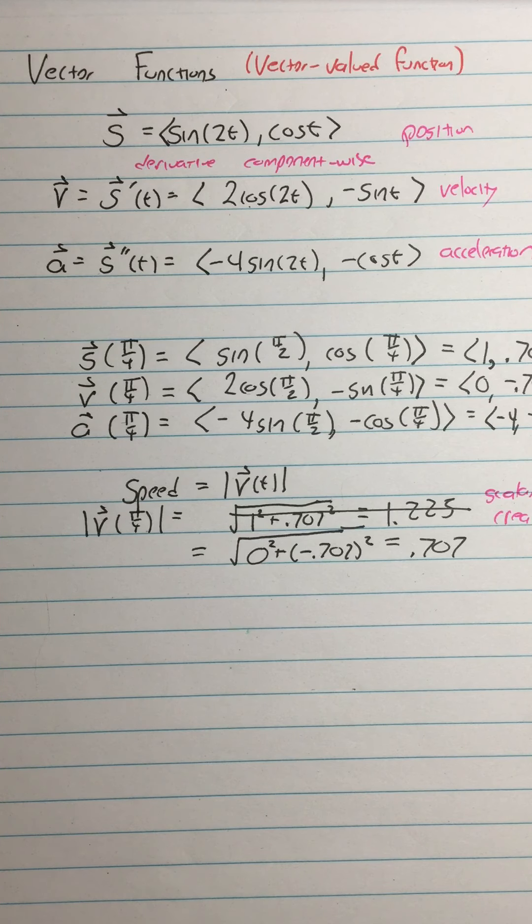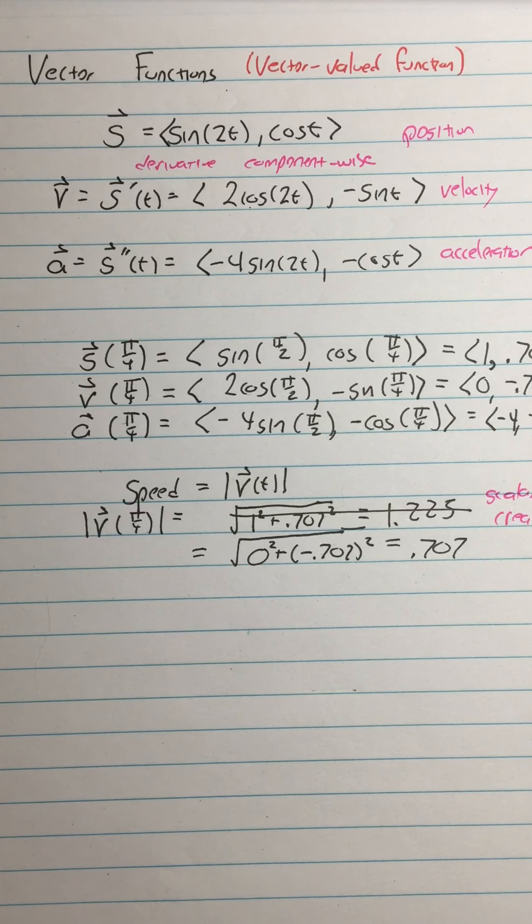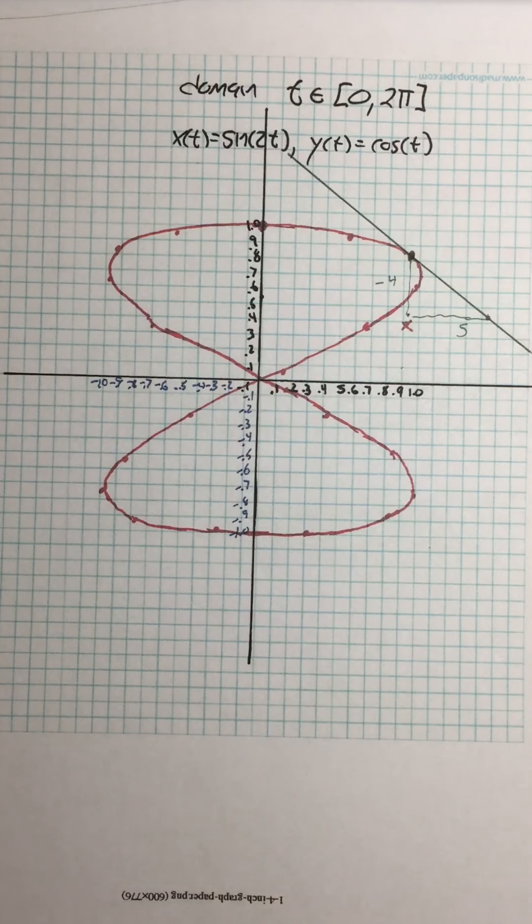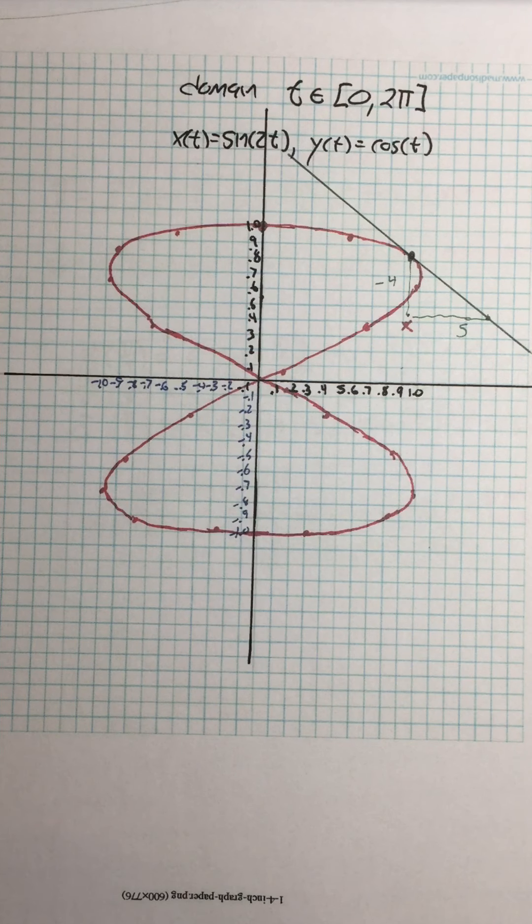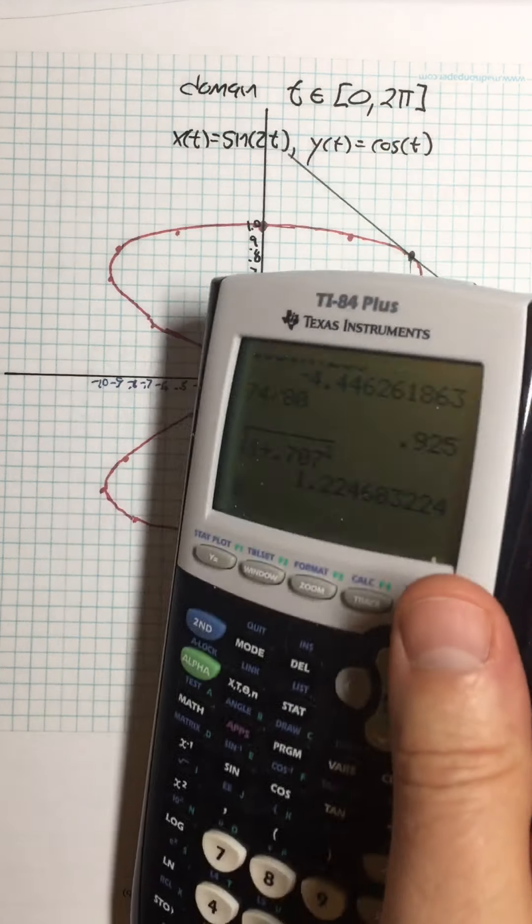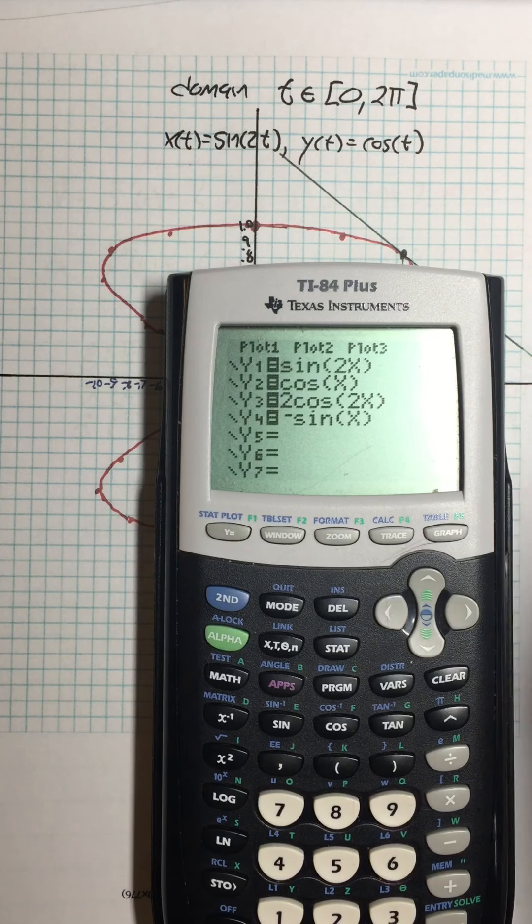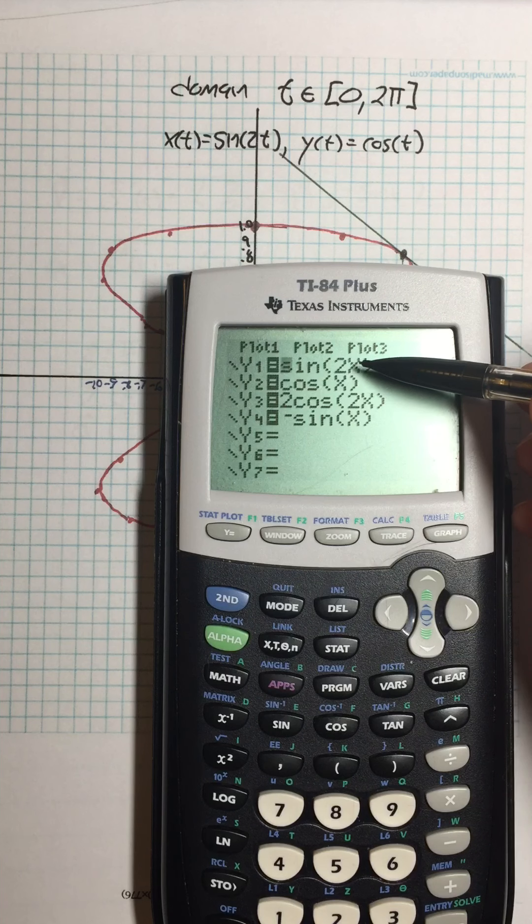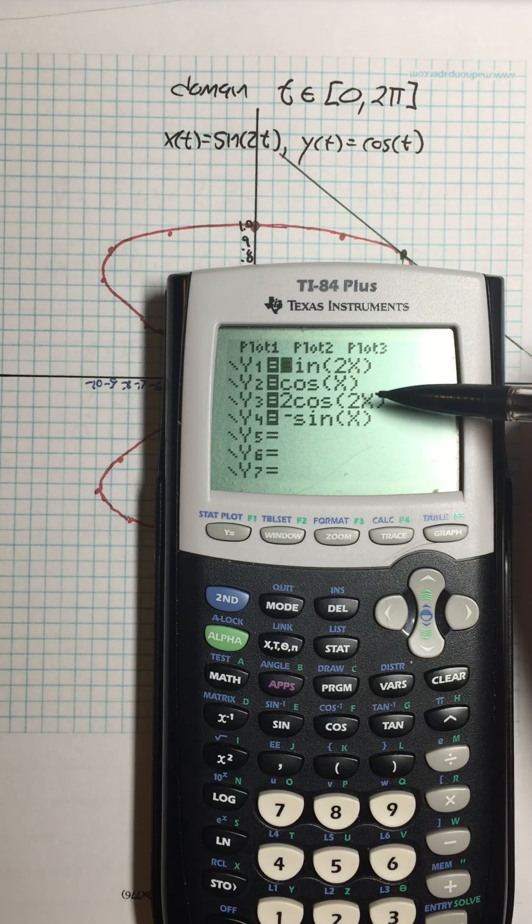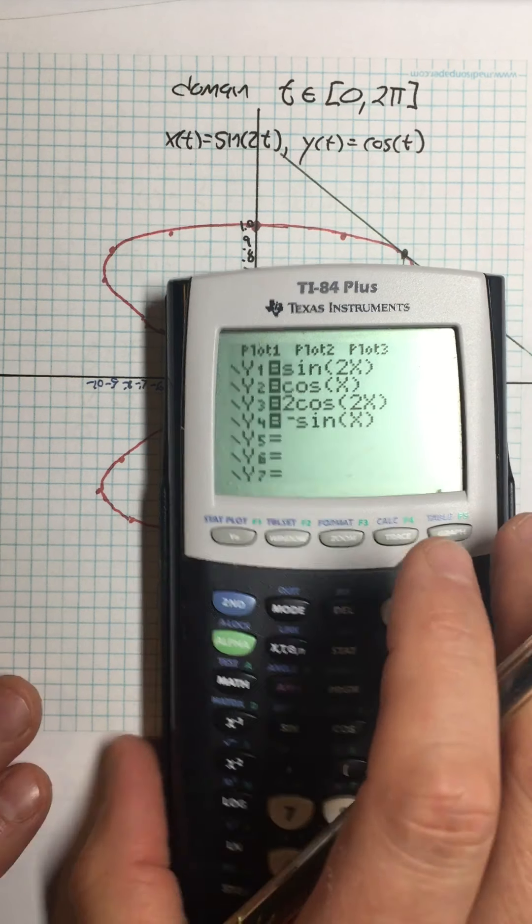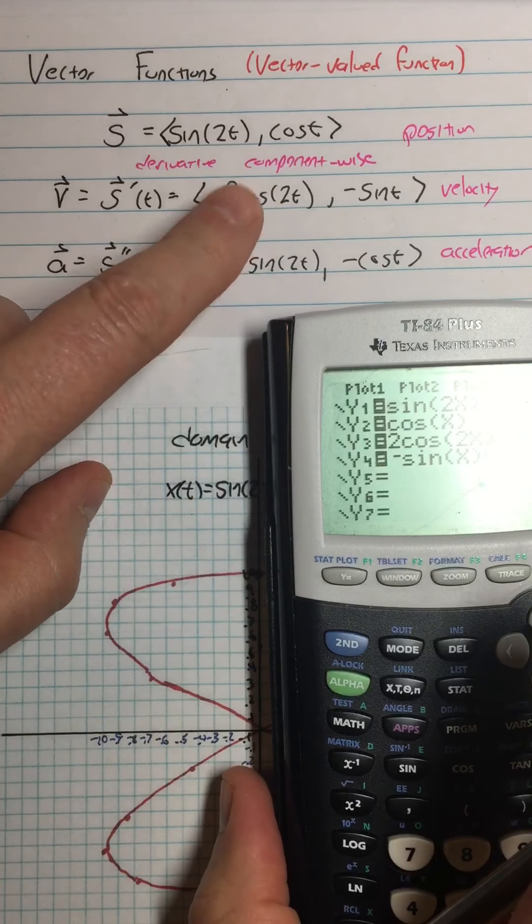And that's really all you need to know to do the homework assignment here. But I do have more discussion and some interesting, cool things to look at. So one thing I did was I took this, and let's see what happens. So what I did was I set in my y equals, so what these are is y1 and y2 are the position vector, position x, position y, and y3 and y4 are the velocity vector, velocity x, velocity y. So those are basically the same functions that we have right there.